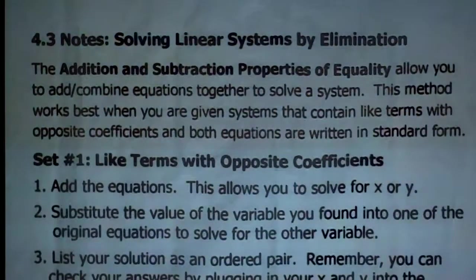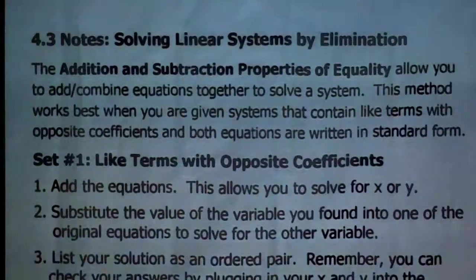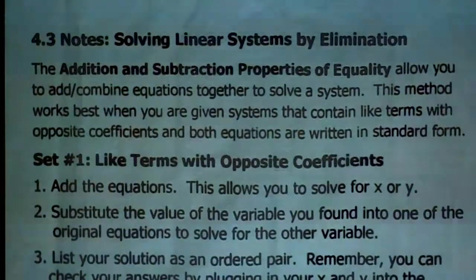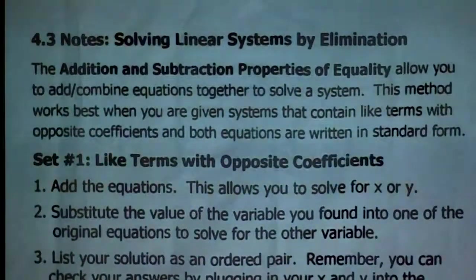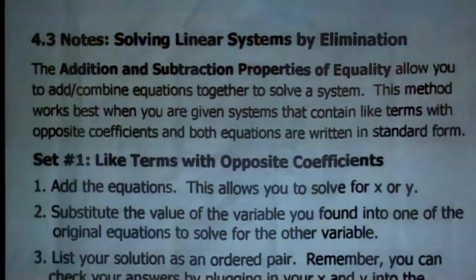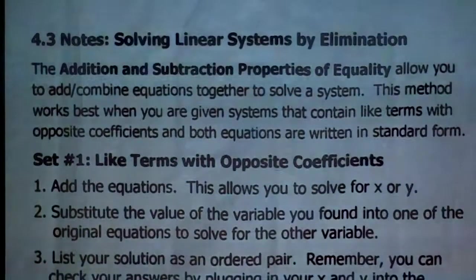From class, sometimes graphing and substitution are not the best way to go. If your equations are set up properly, elimination can make it go quite quick and simple. The reason that systems by elimination works is we talked about the addition and subtraction properties of equality, which basically allows you to add or combine equations together. This method works best when you're given a system that contains like terms with opposite coefficients, and both equations are written in standard form — the Ax plus By equals C form.